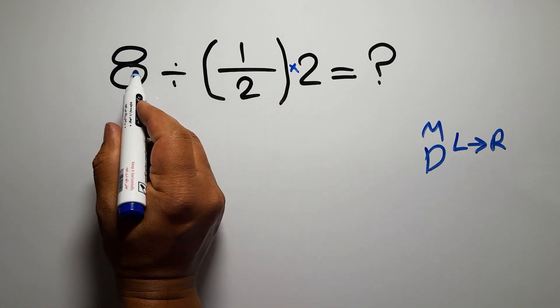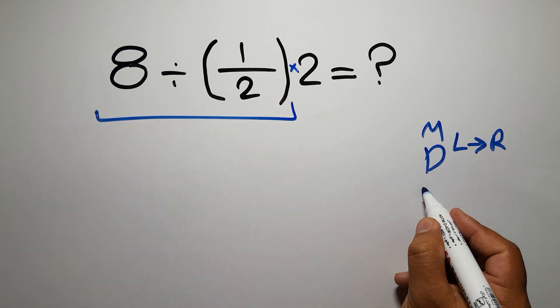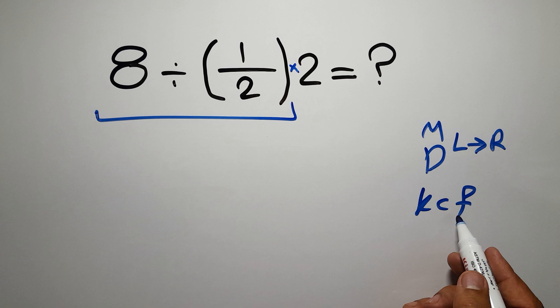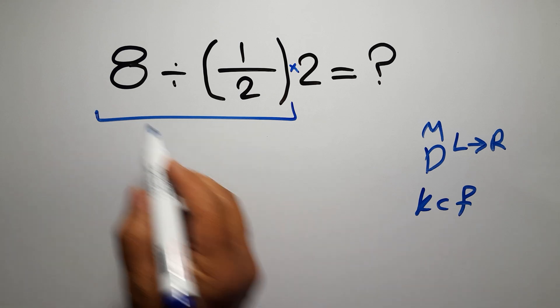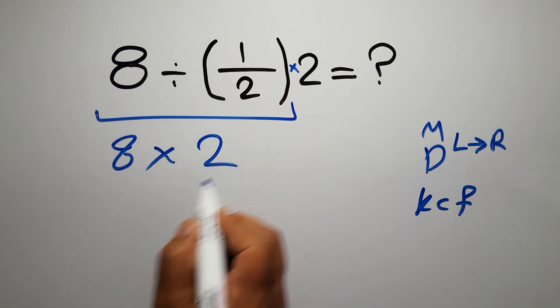So first, 8 divided by 1 over 2. According to the KCF rule, K stands for keep, C stands for change, and F stands for flip. Keep the first fraction, change division to multiplication, and flip the second fraction.